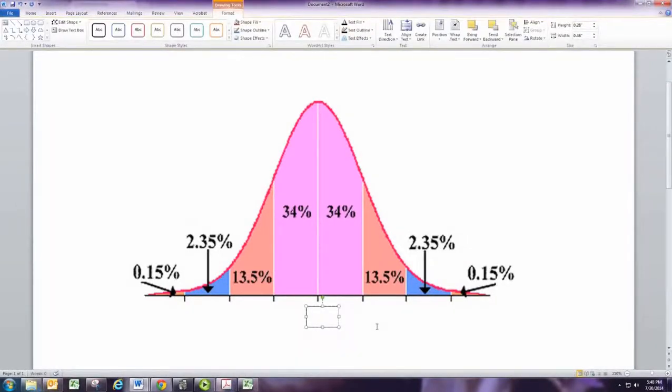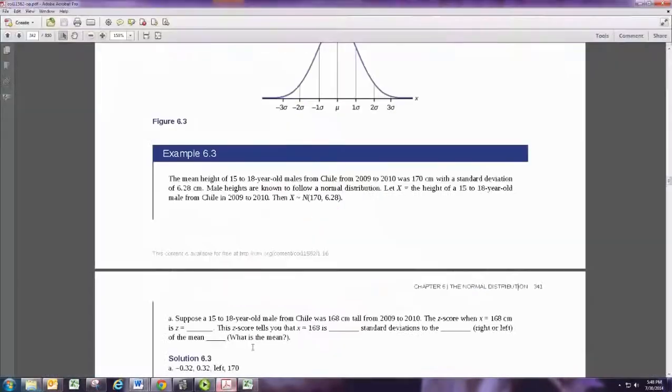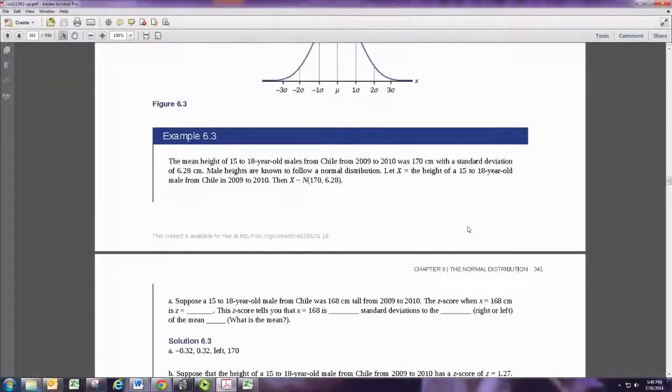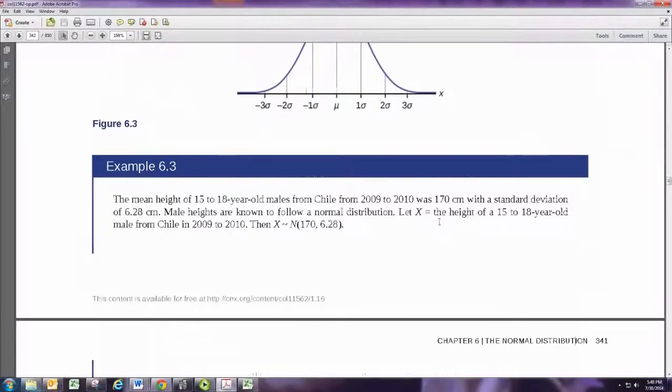And the first line you want to label is the mean. Now, the example we're going to do is this example from the book. The mean height of 15 to 18 year old males from Chile is 170 centimeters, with a standard deviation of 6.28 centimeters. So our mean is 170, our standard deviation is 6.28.